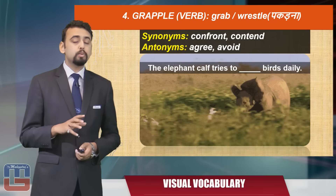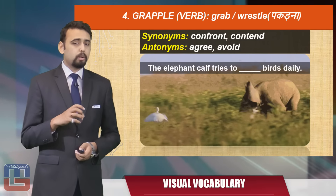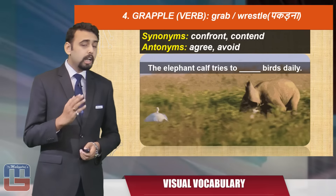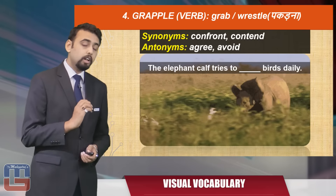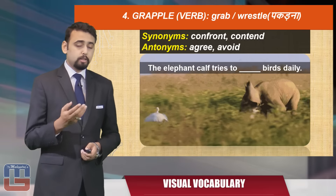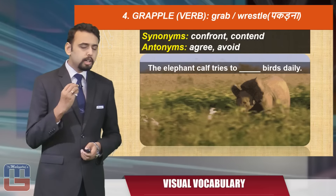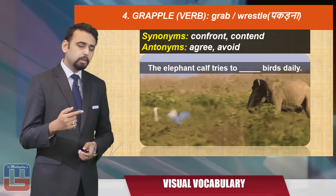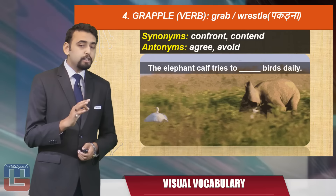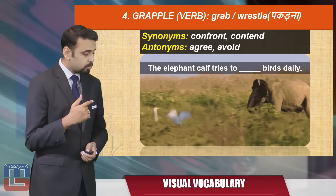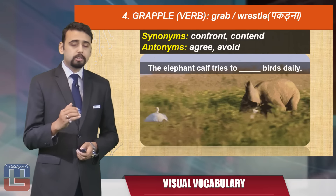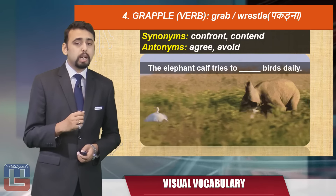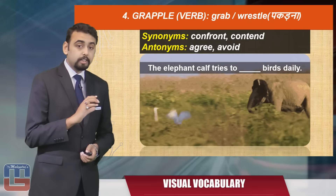The next word is 'grapple,' a verb meaning to grab or wrestle — to go after or face off against something. The synonyms are 'confront' or 'contend,' and the antonyms are 'agree' or 'avoid.' Here's an elephant calf that tries to grab or wrestle birds daily. The sentence becomes: 'The elephant calf tries to grapple birds daily.'